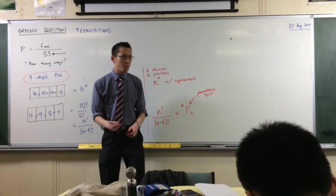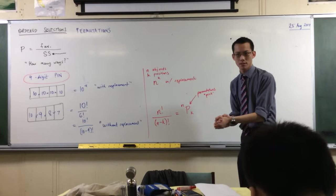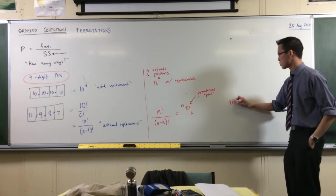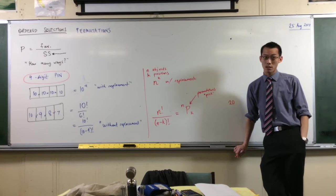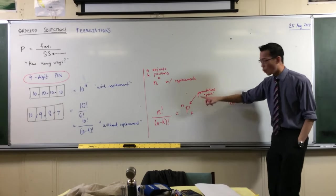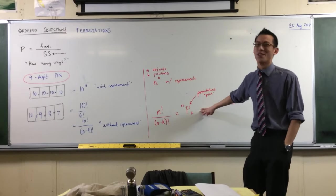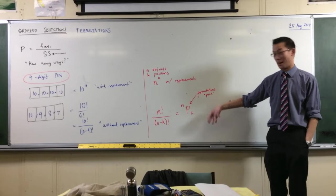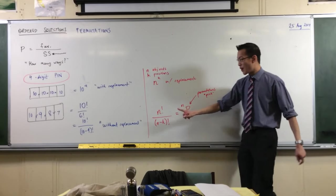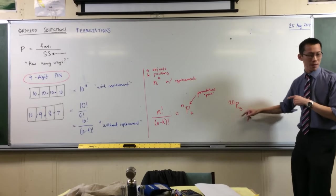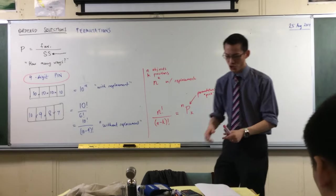This scenario like the four-digit PIN comes up again and again. You've got 20 horses in a race - how many different trifectas are there? A trifecta is first, second, and third place. Is this with or without replacement? Clearly without replacement because you can't get the same horse coming first and second and third. It's without replacement, this scenario, so you're going to pick three: 20 pick 3.